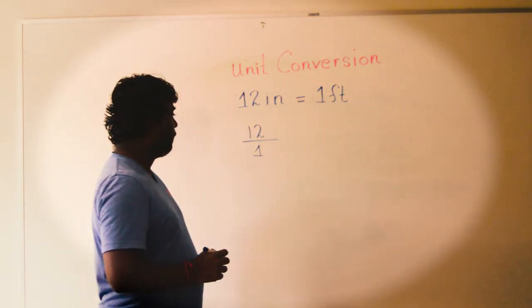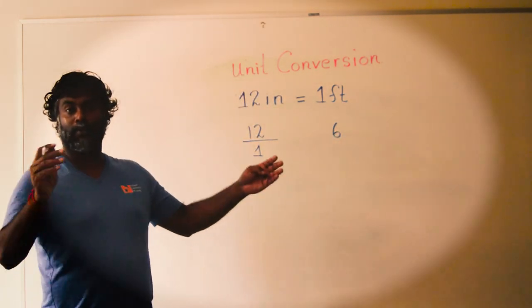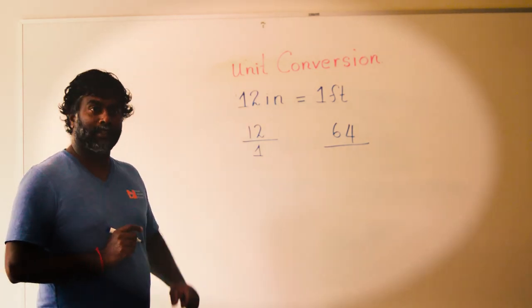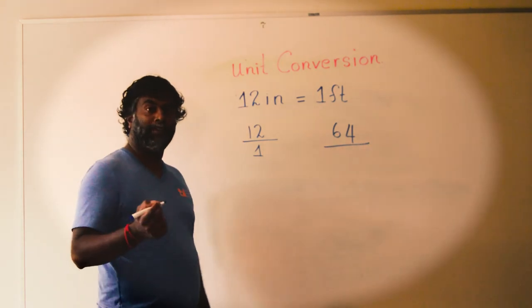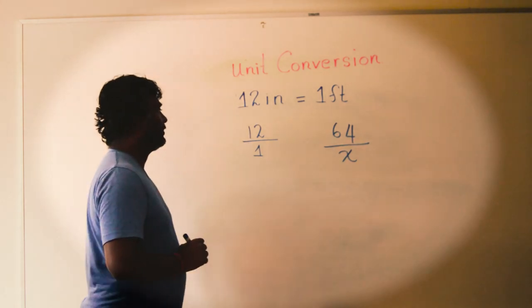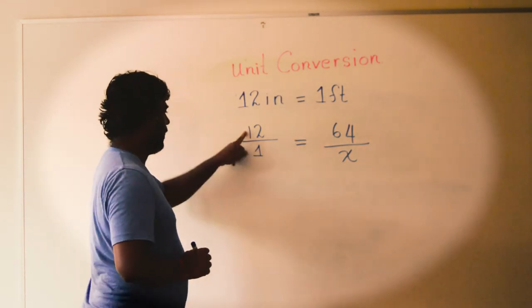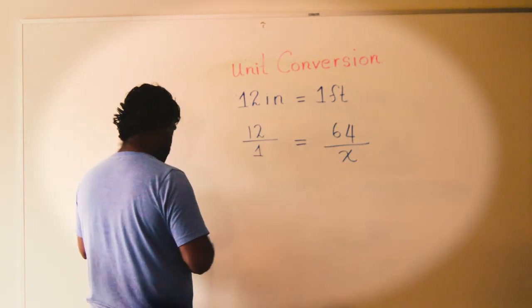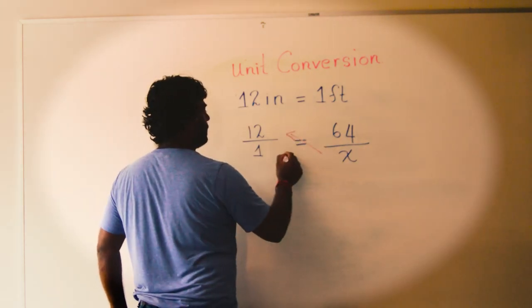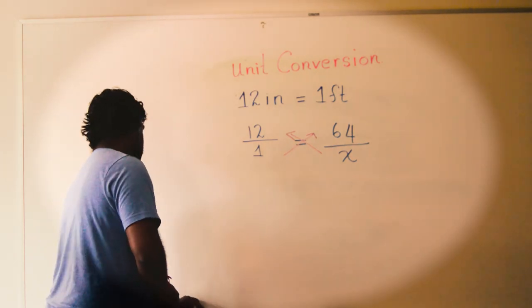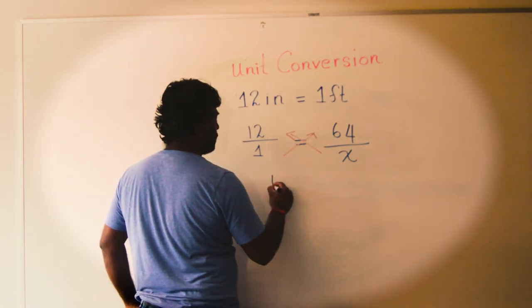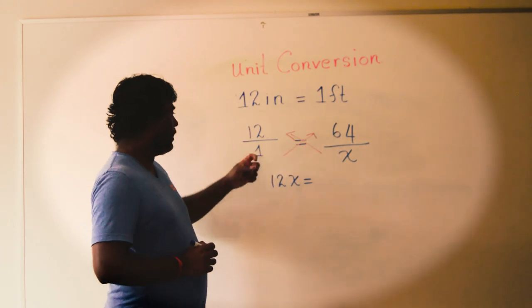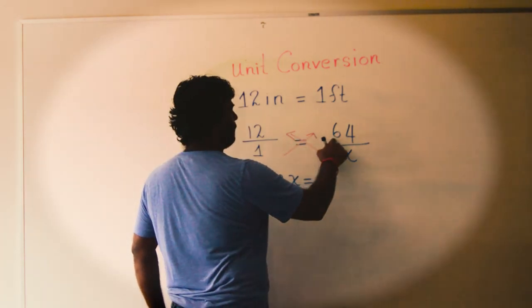Now my question is: if Mr. Ryan's height is 64 inches, what is his height in feet? We don't know, so we put X. So: every 12 inches we have 1 foot; Ryan's height is 64 inches, so how many feet? We do the same thing again — cross multiplication. 12 times X is 12X, which is equal to 1 times 64 — any number multiplied by 1 is that same number — so 12X equals 64.